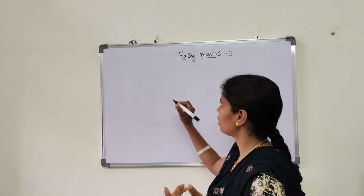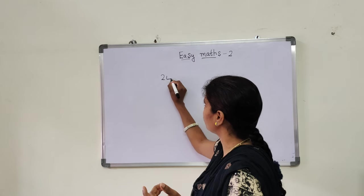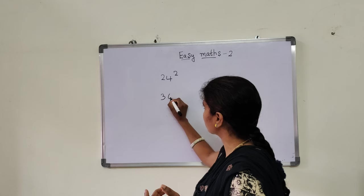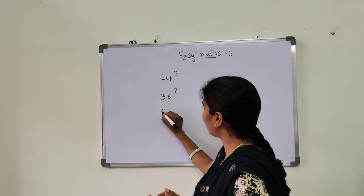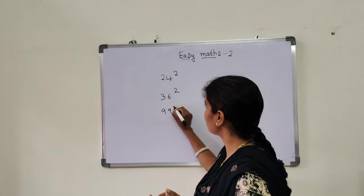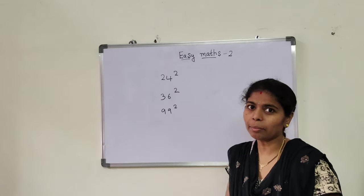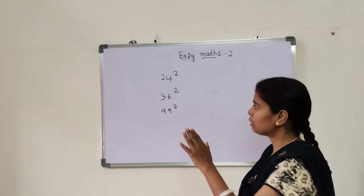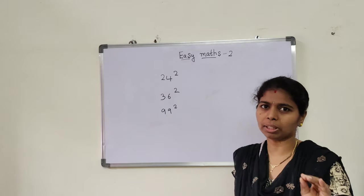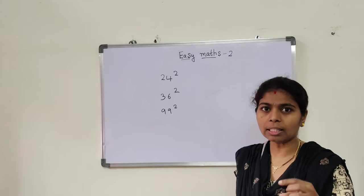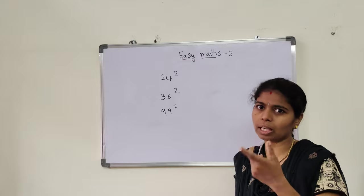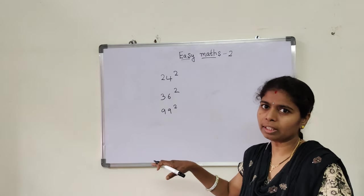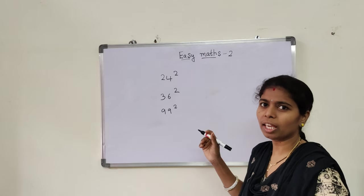For example, you take 24 square, 36 square, and 99 square. I am giving 3 examples here in explanation. Remember, till 99 square will follow one method. After 99, that is 3 digit squares will follow other method. So any number starting from 11 to 99 will follow one method.